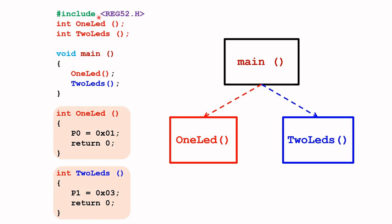I start off with including the REG52.h file. I declare the two functions that I will be calling: the first one is int one LED, then the second function is int two LEDs, followed by the main program. Immediately after the main program, I define the two functions. The purpose of one LED is to output 01 hex to port 0, and the second function int two LEDs is to output 03 hex to port 1 or P1.